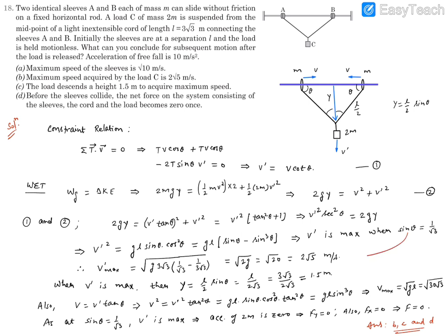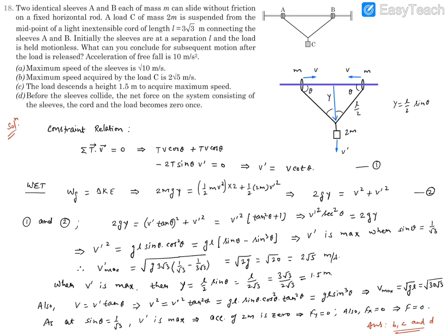Substituting sin θ = 1/√3 back into v'² = gL·sin θ·cos²θ with L = 3√3: v'²_max = g·(3√3)·(1/√3)·(1 − 1/3) = 10·(3√3)·(1/√3)·(2/3). Simplifying: (3√3/√3) = 3, giving 10·3·(2/3)·... which reduces to v'_max = √20 = 2√5 m/s. Option B states the maximum speed of the load is 2√5 m/s — that matches our calculation, so option B is correct.